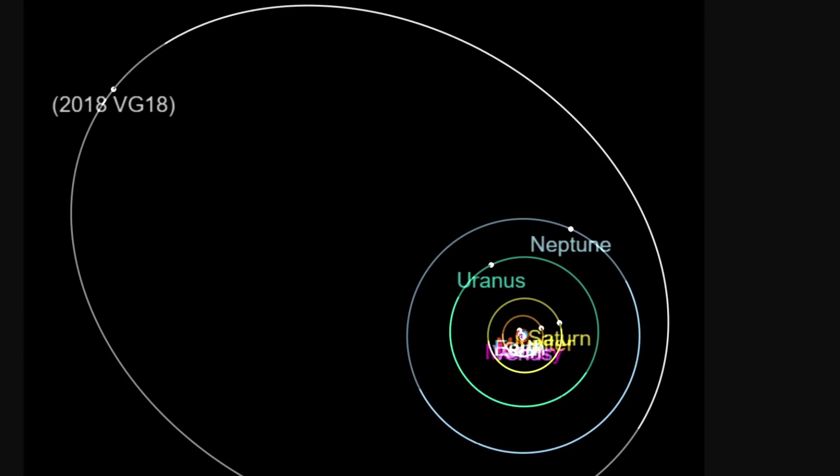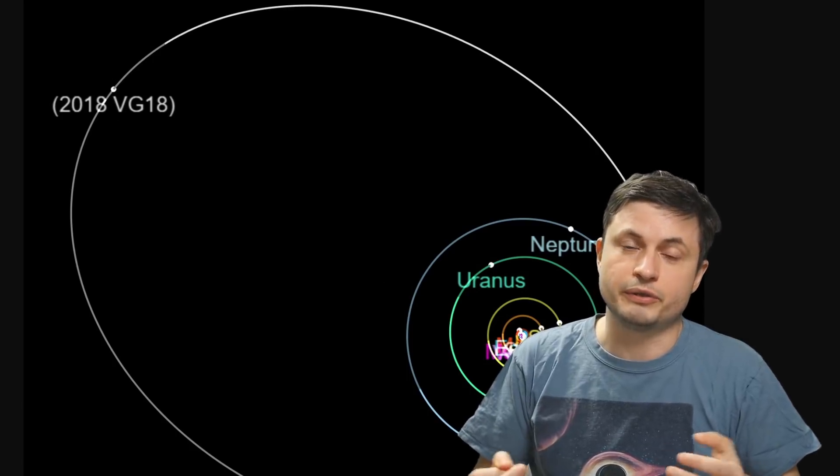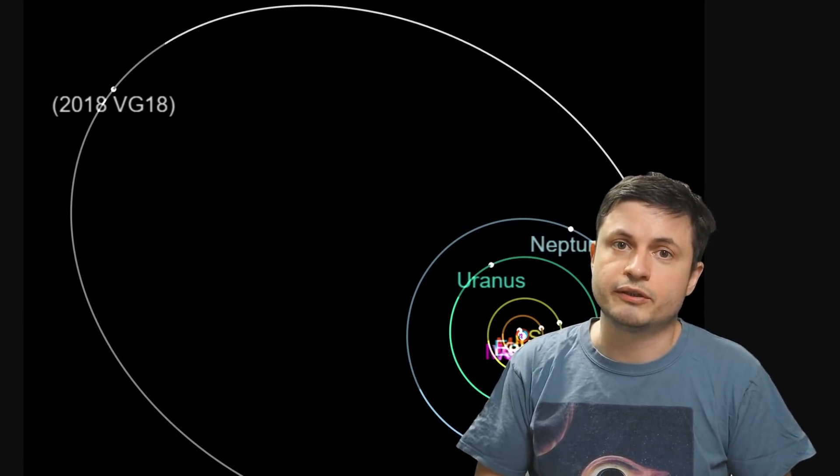Back then the three famous astronomers Scott Shepard, David Tholen and Chad Trujillo were working in a Hawaiian observatory and discovered this object known as 2018 VG18. It was actually the farthest object discovered back then. It was approximately 128 astronomical units away from the sun and because they didn't have a good name for it yet they decided to call it far out.